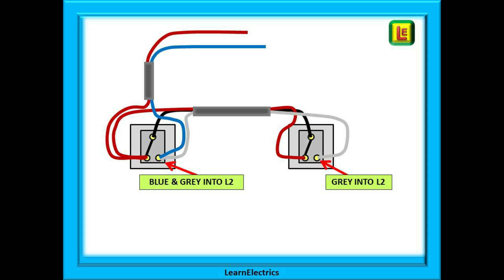At the first switch you should have just two colored wires left, a blue and a grey. Put these together into terminal L2. At the second switch, put the only remaining wire, the grey wire, into terminal L2.